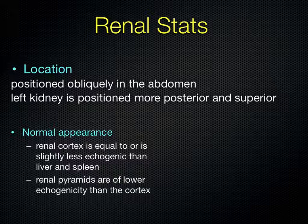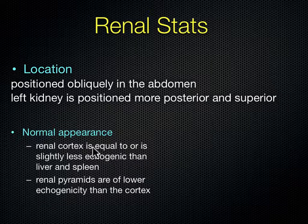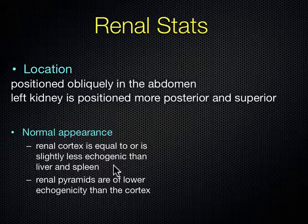The kidneys are located obliquely in the abdomen. The left kidney is more posterior and more superior — more towards the head and more towards the bed. The renal cortex is less echogenic than the liver or spleen, and the renal pyramids are less echogenic than the cortex because they're filled with urine. So in terms of brightness: the liver and spleen are brighter than the kidney cortex, and the kidney cortex is brighter than the renal pyramids.